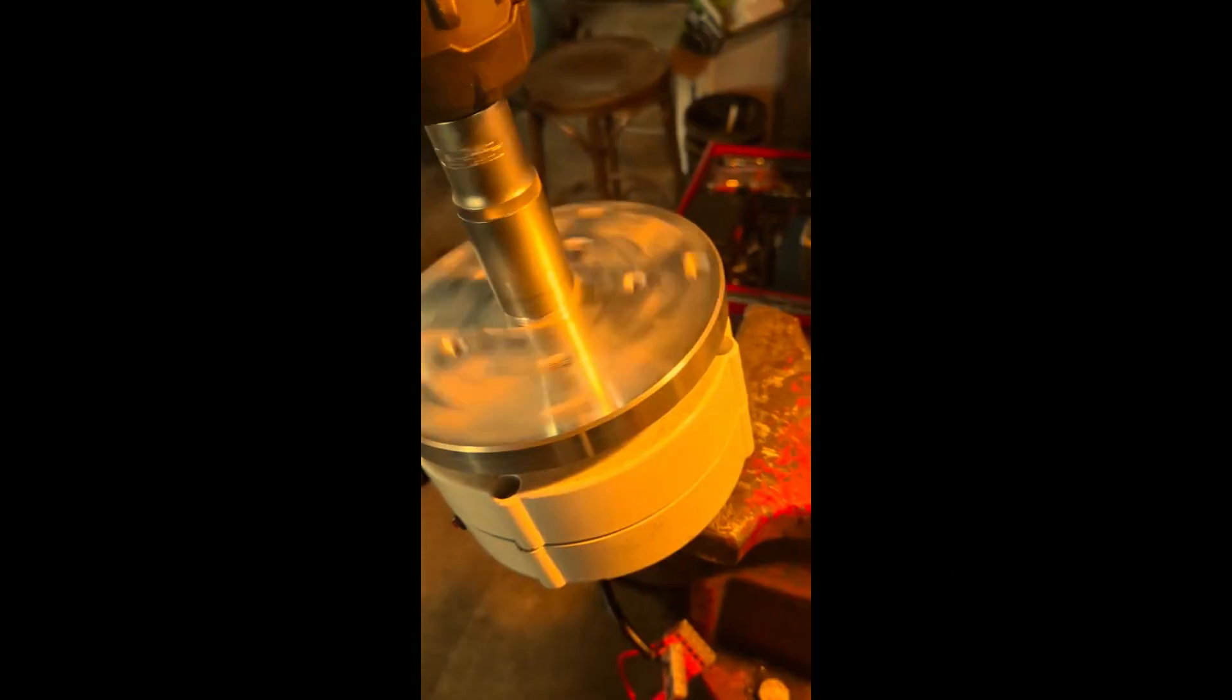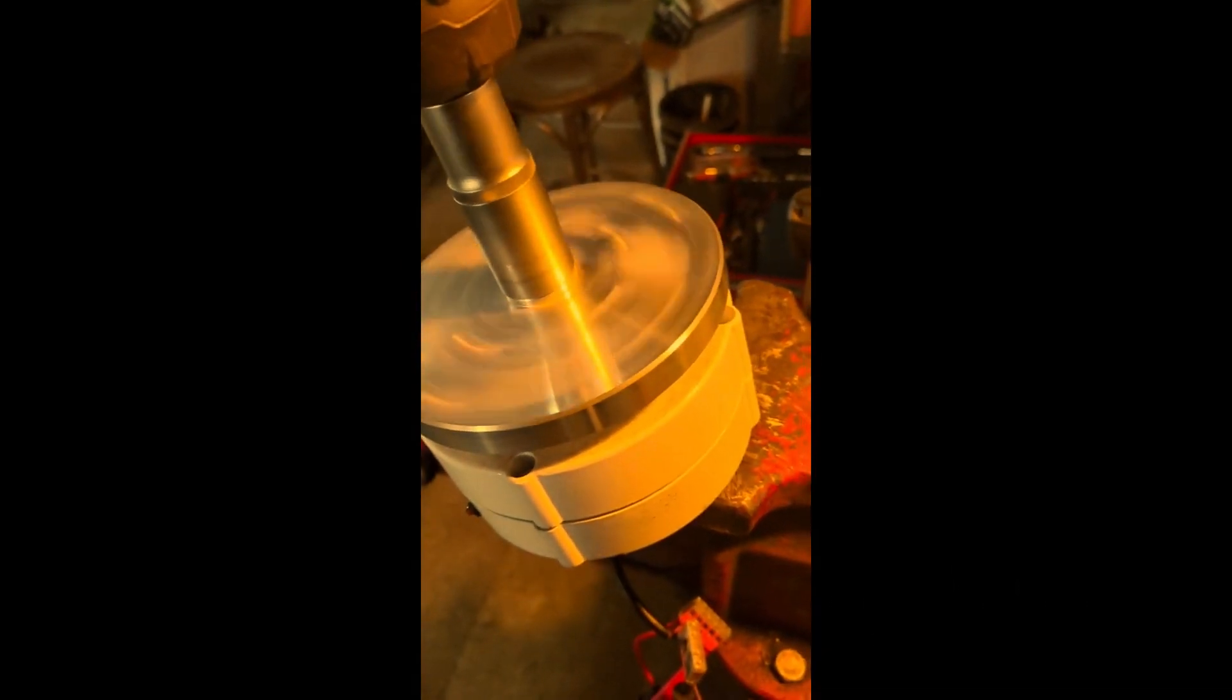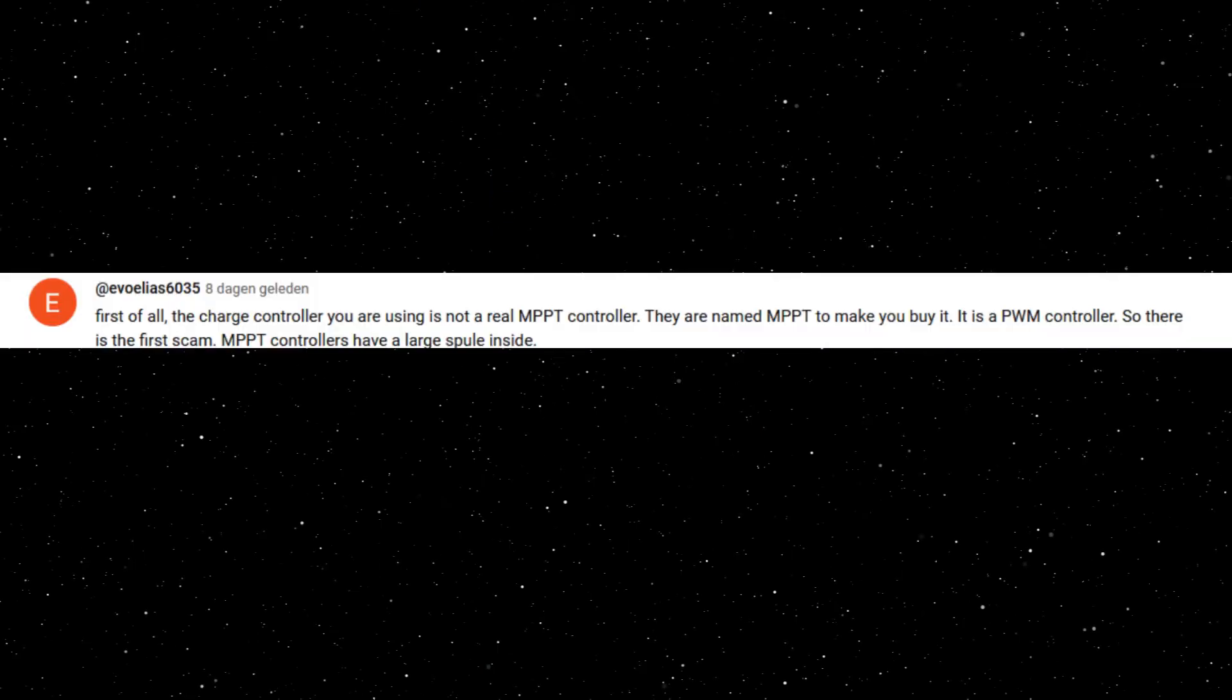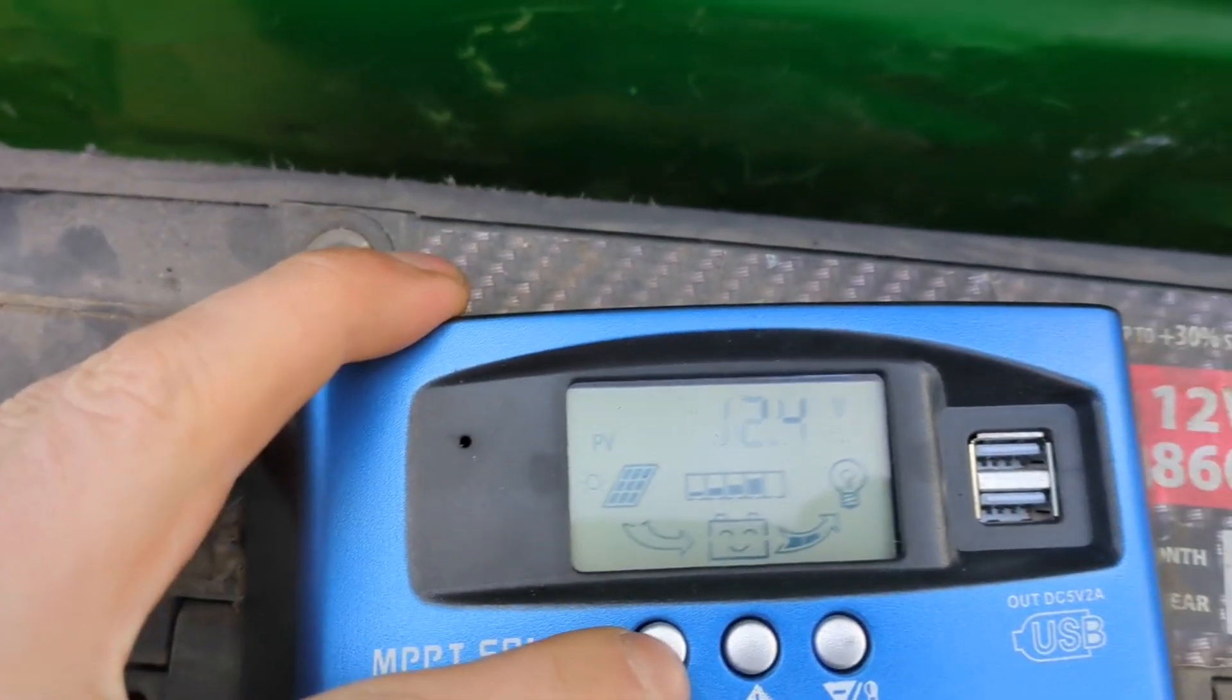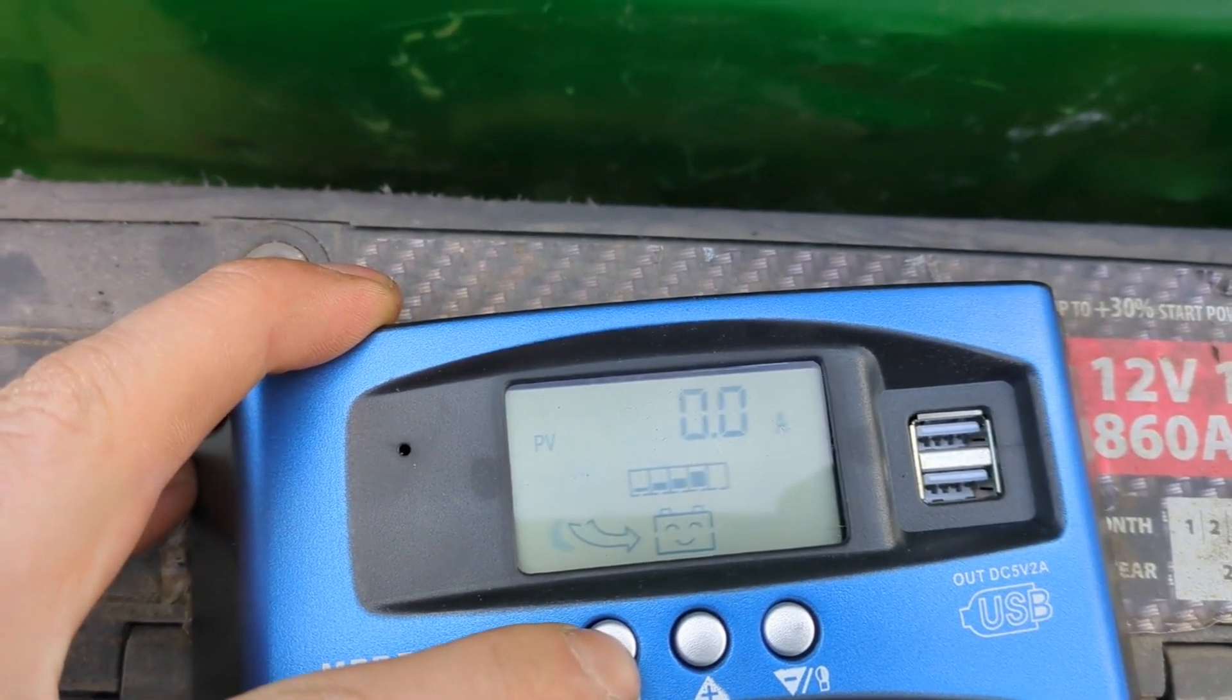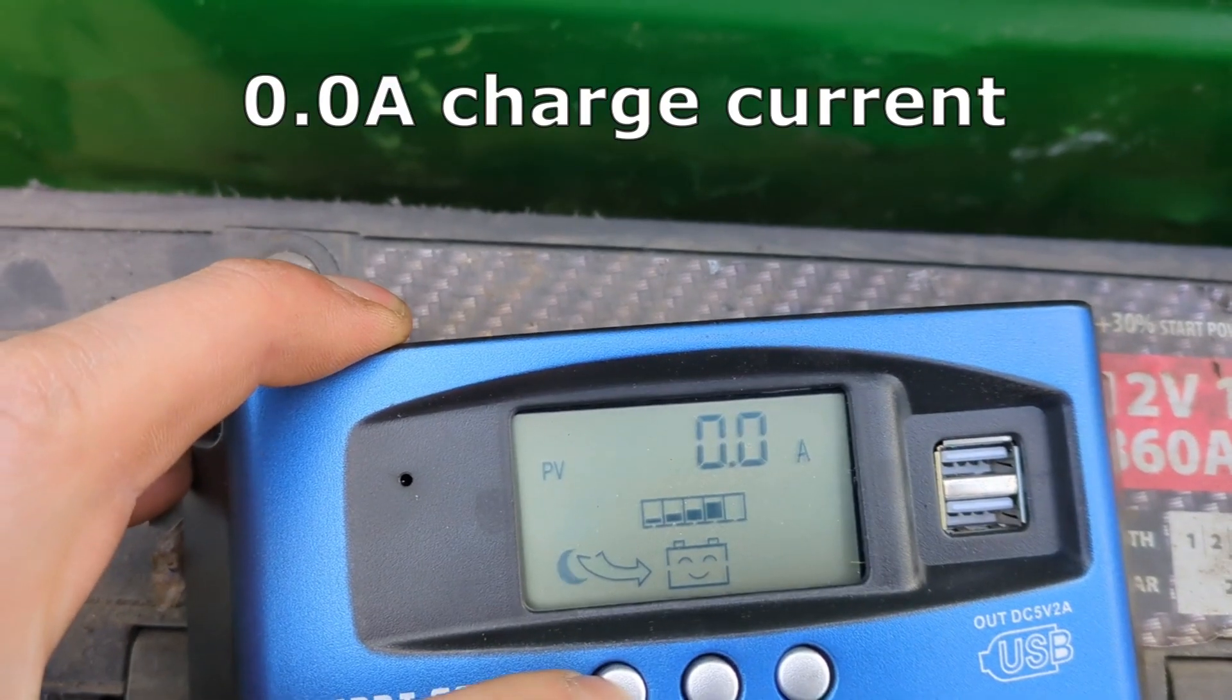We read a lot of the comments and wanted to address some further issues with this crappy windmill. This comment points out that the charge controller being used was not a real MPPT controller, which is probably true, and that's a topic for another video. But the thing is that even though it might be a PWM controller, it is capable of handling the little power that's coming from this wind turbine.